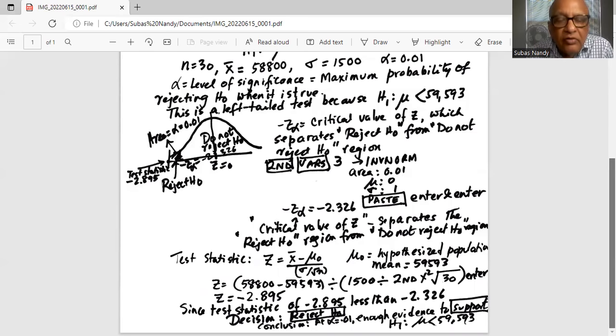$1,500 is the population standard deviation divided by second x square, which gives me the square root of 30. So first I press the second button, then x square, get the square root 30 and close the right parenthesis and then hit enter. Then we get a test statistic Z value of minus 2.895.